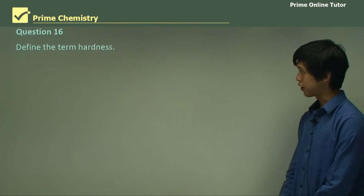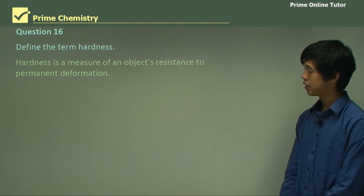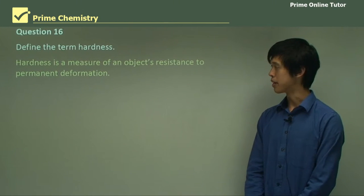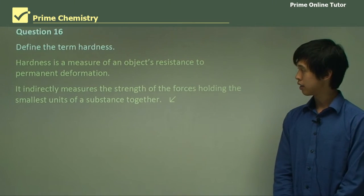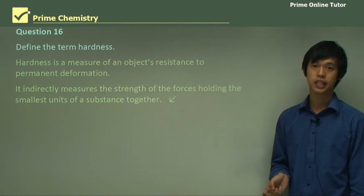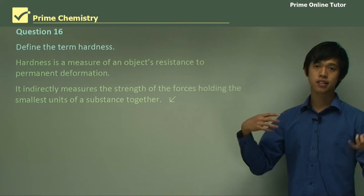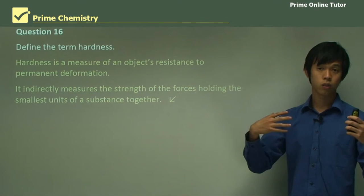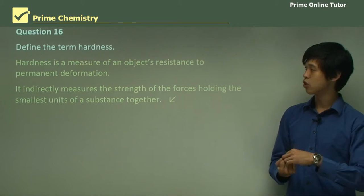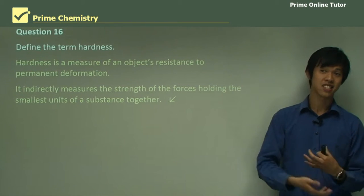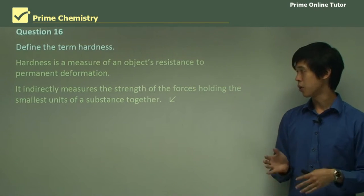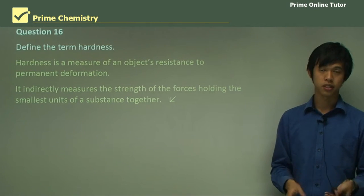Question 16: define the term hardness. Hardness is a measure of an object's resistance to permanent deformation. It indirectly measures the strength of the forces holding the smallest units of a substance together. The key is that it measures how resistant an object is to permanent deformation, and indirectly measures the strength of the forces holding different units of the substance together.